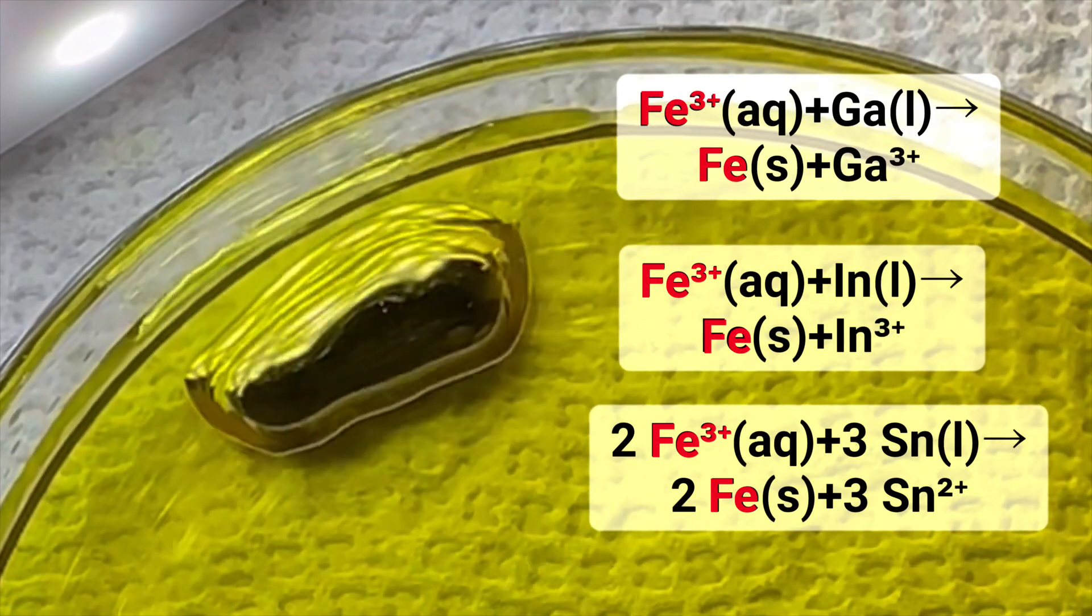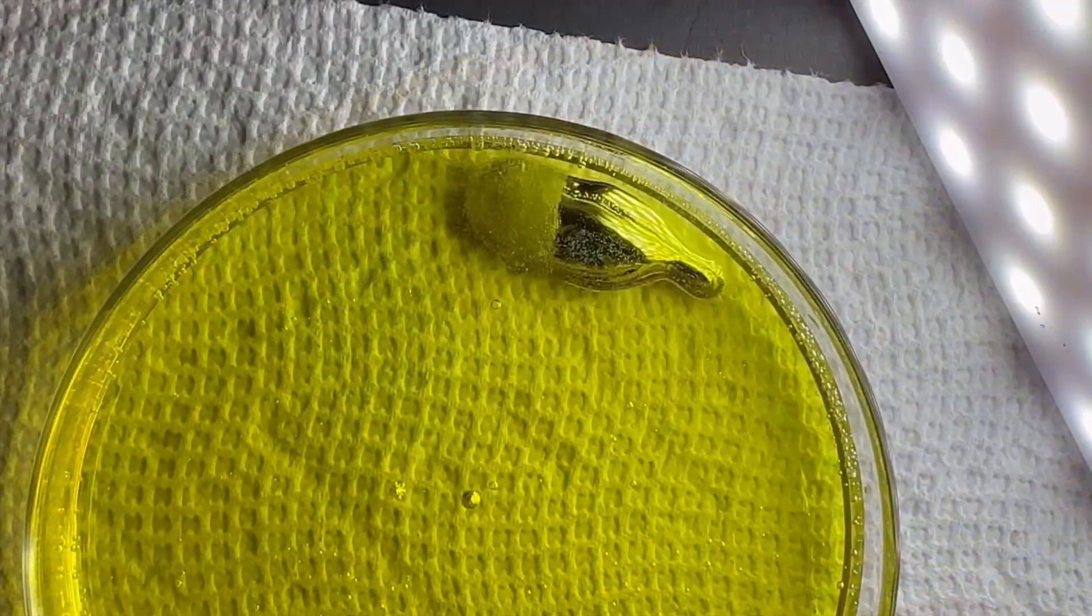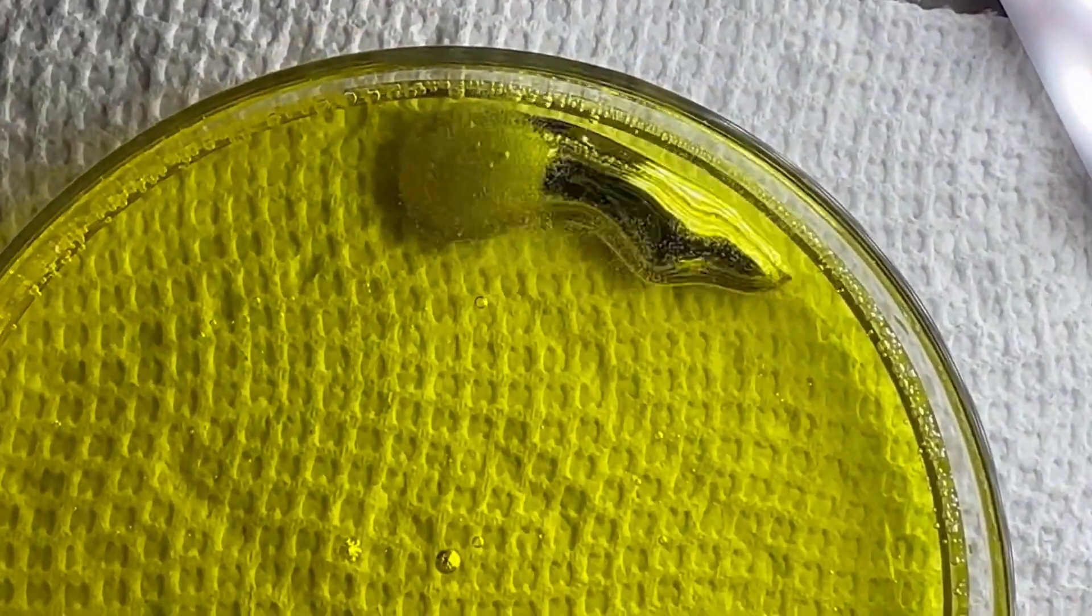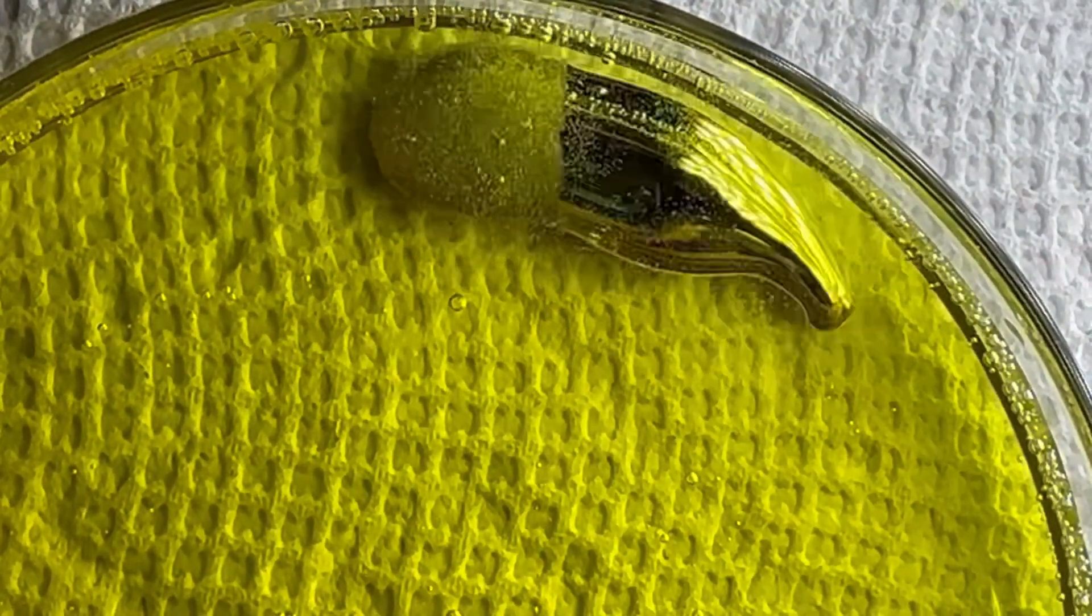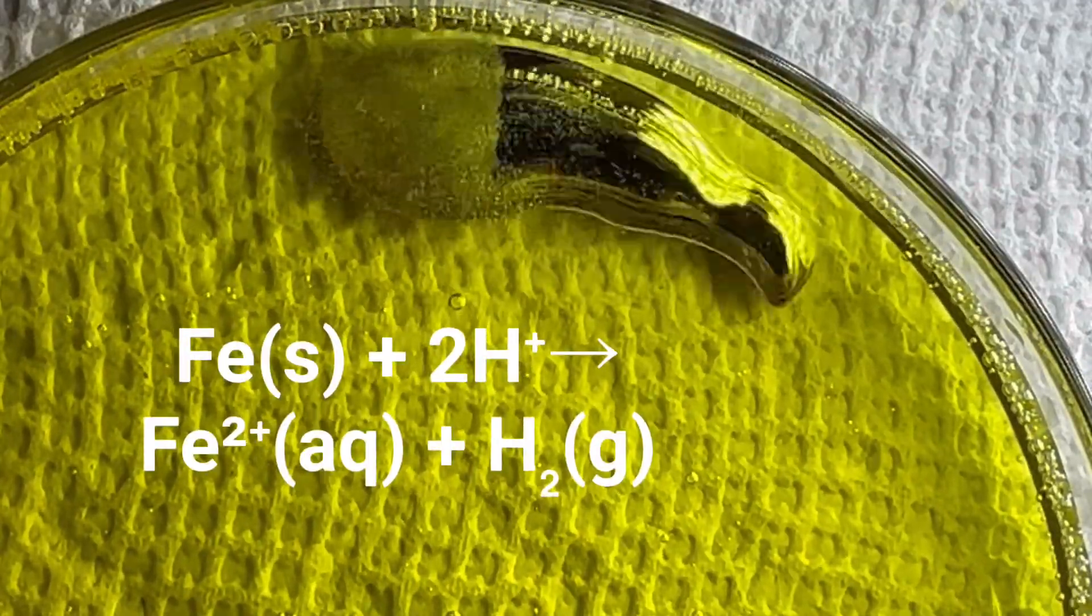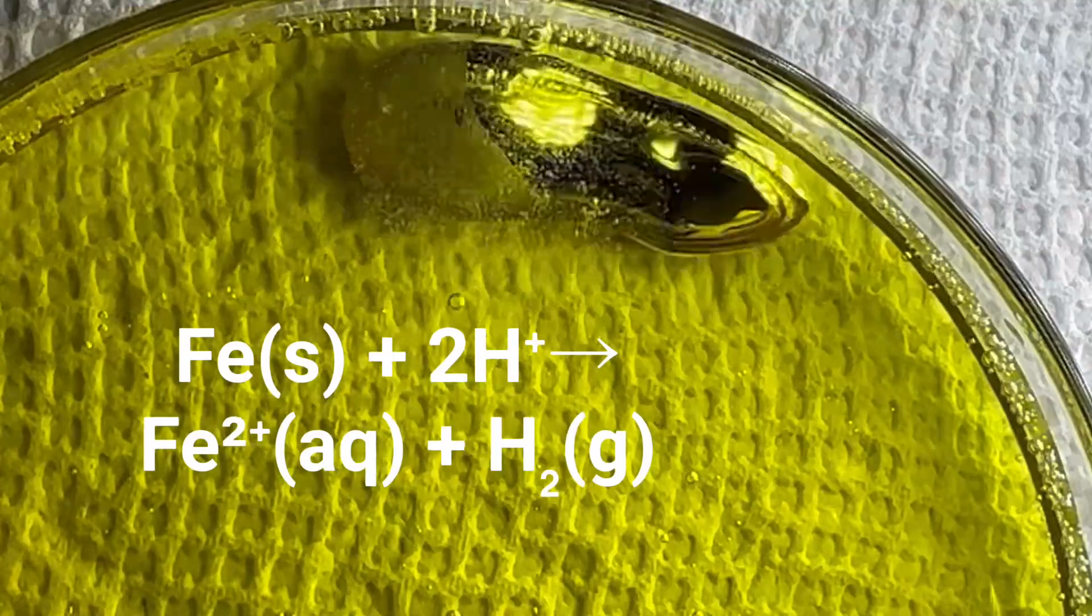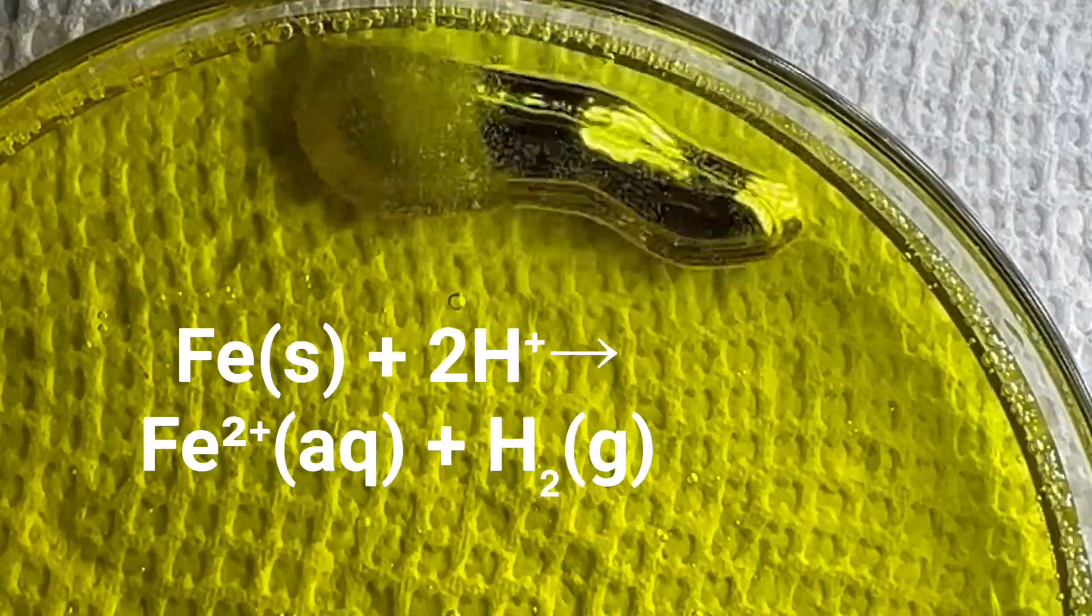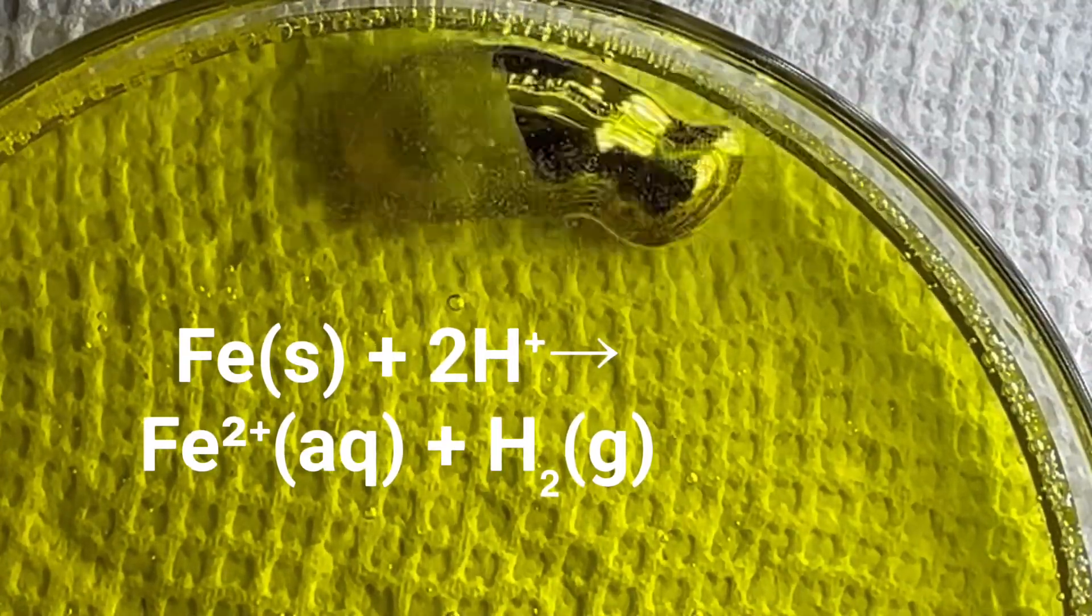And that allows Squirt to spread out instead of just beading up. But notice that Squirt has bubbles on his backside. These bubbles form when the iron particles on the surface react with the acid in solution to form hydrogen gas. Of course, this reaction consumes iron particles on the surface, and this restores the high surface tension.